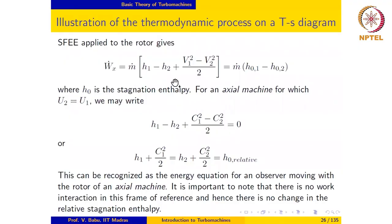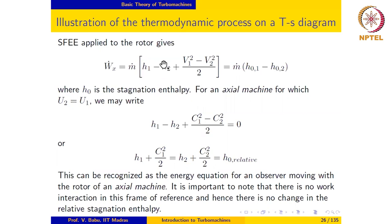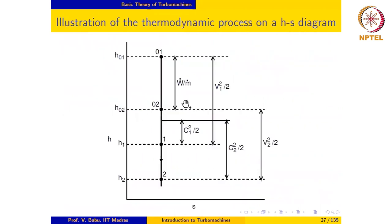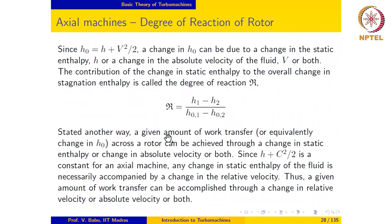The key takeaways from the previous lecture are as follows. It is possible to effect a certain transfer of work to the rotor of a turbo machine by means of the change in specific enthalpy of the fluid in the rotor passage, or by means of a change in specific kinetic energy of the fluid in the rotor passage, or both. The fractional contribution of the change in specific enthalpy to the total specific work transfer is defined as the degree of reaction.